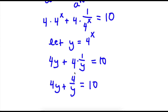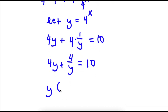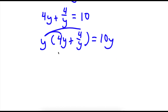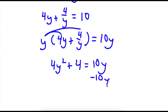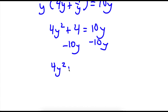Now if I multiply both sides by y, I get y times 4y plus 4 over y equal to 10y. Distributing the y: y times 4y is 4y squared, plus y times 4 over y is simply 4, equal to 10y. Now I can subtract 10y from both sides, giving me 4y squared minus 10y plus 4 equals 0.